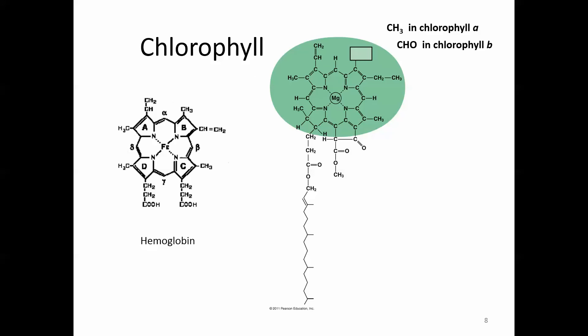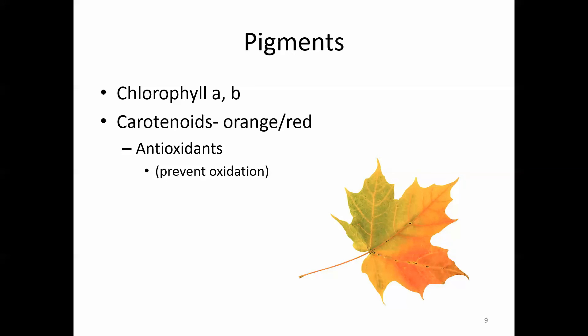This process uses chlorophyll A and B, which have a very similar structure to hemoglobin except chlorophyll has a magnesium at the core. Chlorophyll A and B have slightly different parts attached to one carbon. It also has a long tail that allows chlorophyll to embed into a membrane — in the case of plants, the thylakoid membrane. Carotenoids are orangish or red pigments that help the plant absorb other wavelengths of light and also act to prevent oxidation during these reactions.